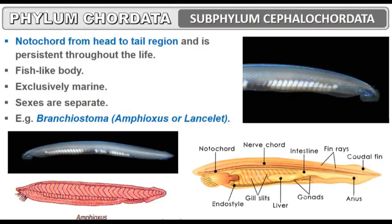Amphioxus is also called Lancelet because of its lancet-like shape. Looking at its internal structure, we can see the nerve cord, which is dorsal, then the notochord present between the alimentary canal and the nerve cord, and then the alimentary canal running from mouth to the anus.